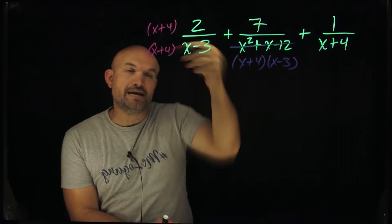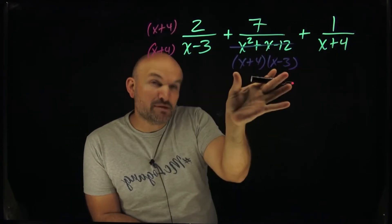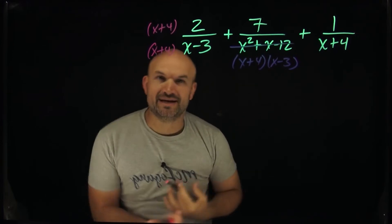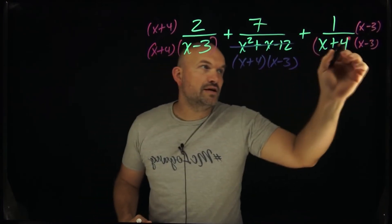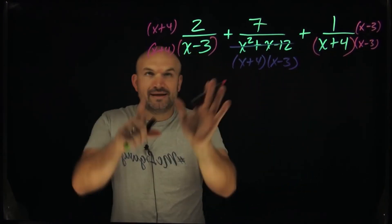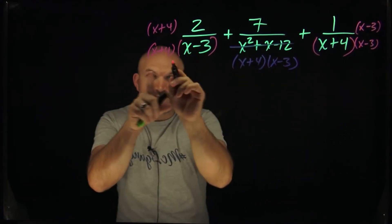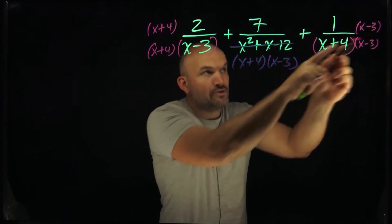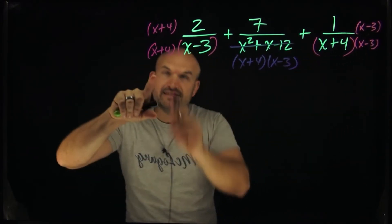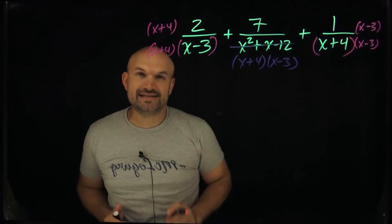Remember, you multiply on the top and the bottom to produce equivalent fractions. Over on the last fraction I have an x plus 4, so to obtain the least common denominator I just need to multiply by an x minus 3. I'll insert some parentheses to stay consistent — the common denominator of all three fractions is (x + 4)(x − 3). Whatever I did in the denominator I also did in the numerator. I didn't have to do anything to the middle fraction because it already had the LCD.